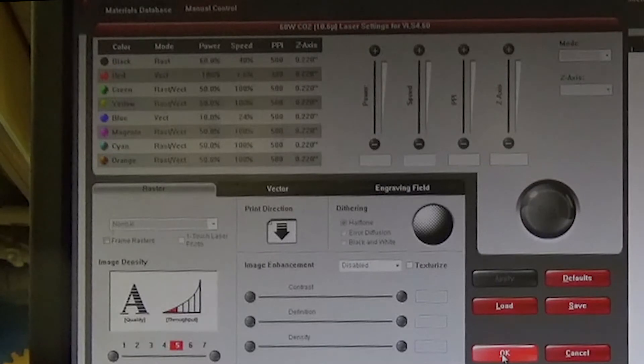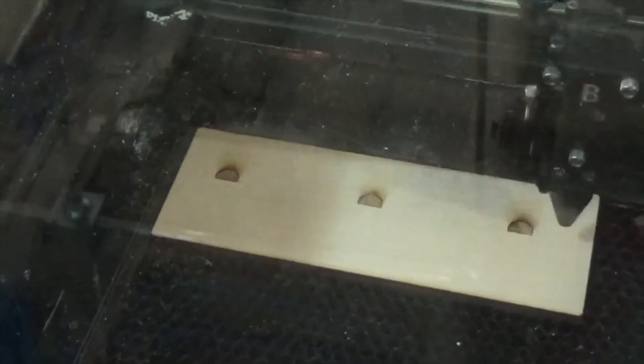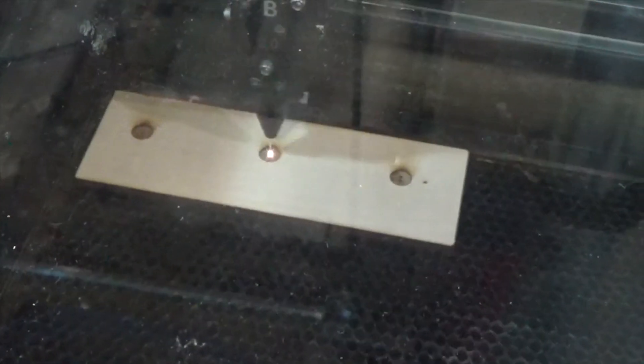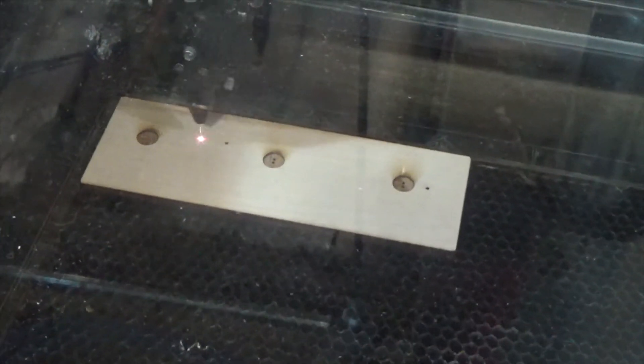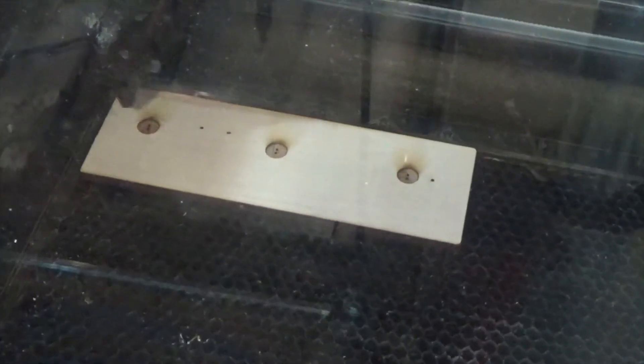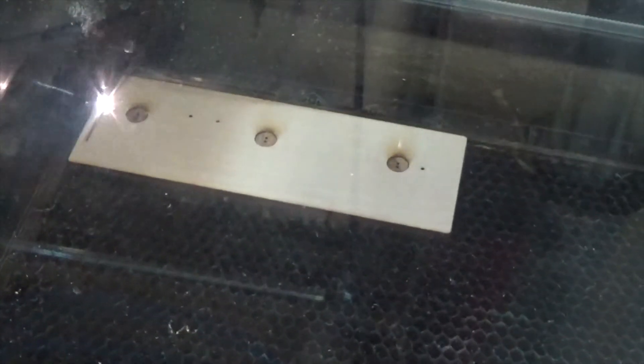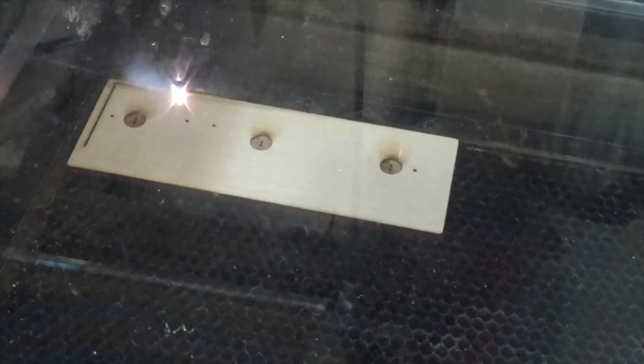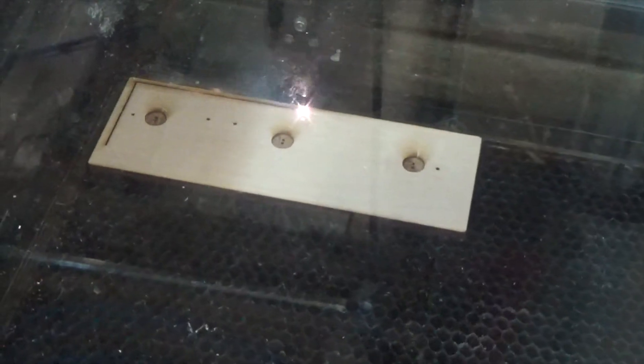So this is what rastering looks like on the laser cutter. Rather than following vectors like it does for engraving and cutting, it's going back and forth just like a dot matrix printer would. And you can see it's actually carved away some deeper pockets because I changed those settings. And it's cutting the two holes in each pocket for the wires on the back of the bulb to stick through.